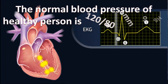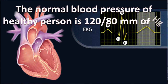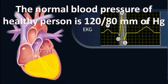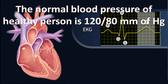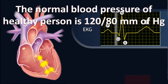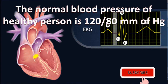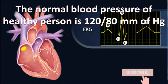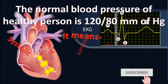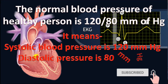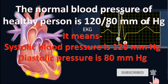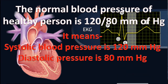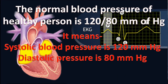The normal blood pressure of a healthy person is 120 by 80 mm of Hg. This means systolic blood pressure is 120 mm Hg and diastolic pressure is 80 mm Hg.